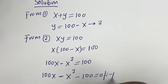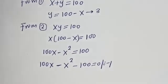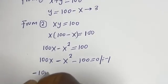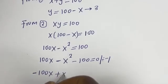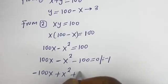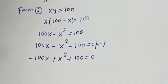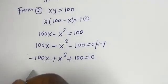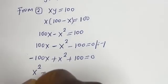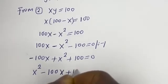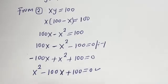Let's divide all terms by minus 1. Then we have minus 100x plus x squared plus 100 is equal to 0. We can put this in standard form: x squared minus 100x plus 100 is equal to 0. This is a quadratic equation. Let's solve this using the quadratic general formula.